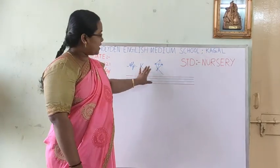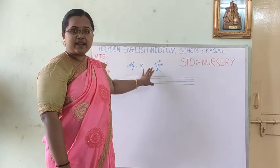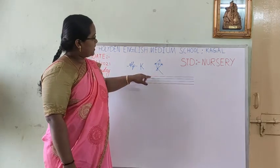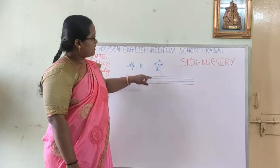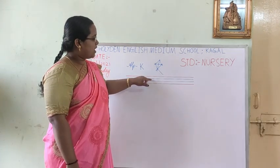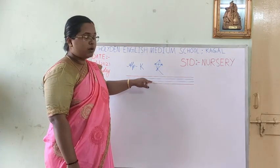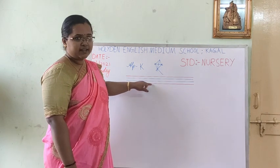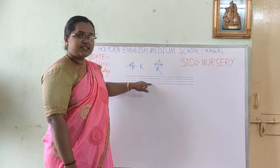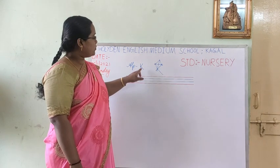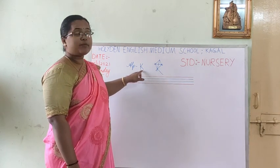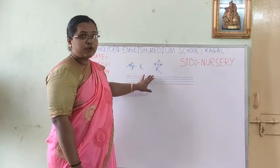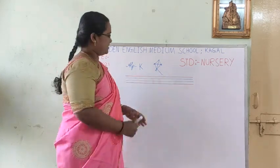In your English notebook like this, the four lines are there: red line, blue line, blue line, red line. Now let's see how to write alphabet K in these four lines.